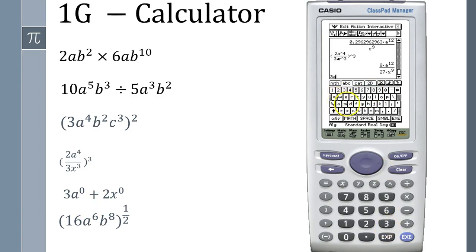So let's try the next one down here: 3a to the power of 0 plus 2x to the power of 0 is 5.